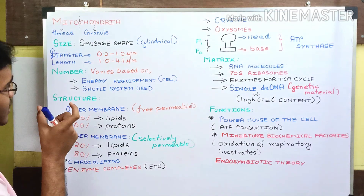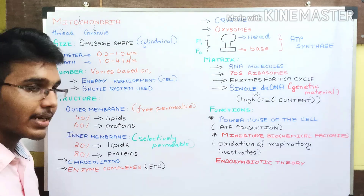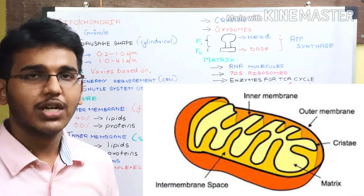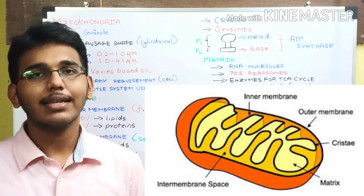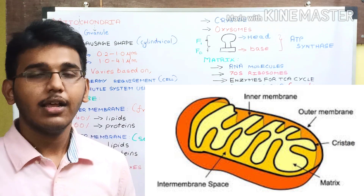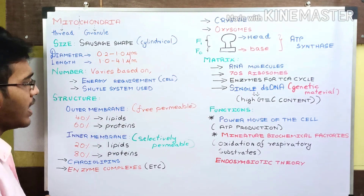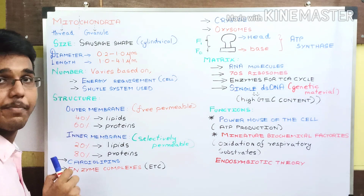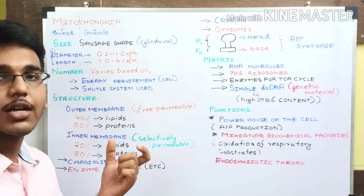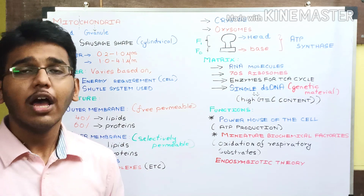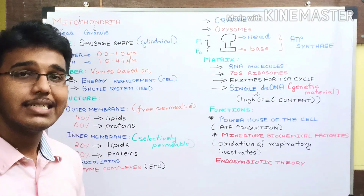The mitochondria is a double membrane-bound structure which includes the mitochondrial matrix at the center along with genetic material. The outermost covering is the outer membrane, composed of 40% lipids and 60% proteins. Because of this composition, the outer membrane is freely permeable to most molecules.